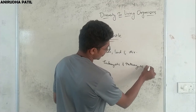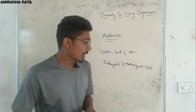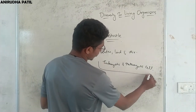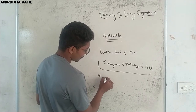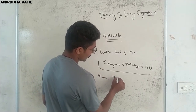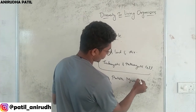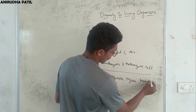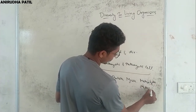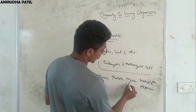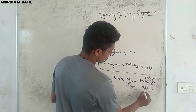Further, the classification evolved, and finally we divided organisms based on five kingdoms: Monera, Protista, Mycota or Fungi, Metaphyta or Plantae, and Metazoa or Animalia. So this is Fungi, this is Plantae, and this is Animalia.